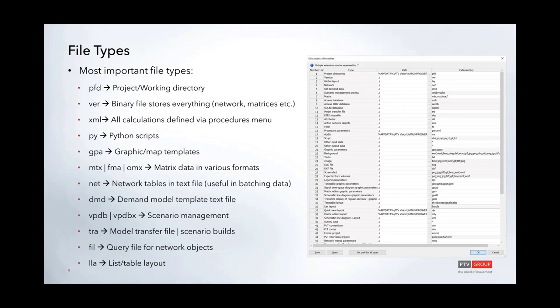The XML file specifies procedure calculations — trip generation, distribution, and the call sequence of all calculations. Even though it's an XML file and editable in an XML editor, users typically edit these files in the graphical user interface and then save as XML, after which the file can also be modified directly if you prefer text-based interfaces.